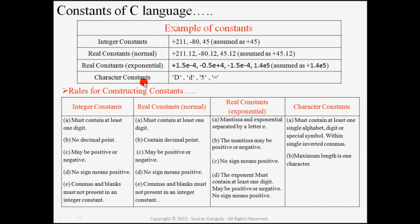Then come to character constants. One letter, one digit, one number, one sign — everything can be a character constant. Remember that you have to use single quotes when you denote a character constant.